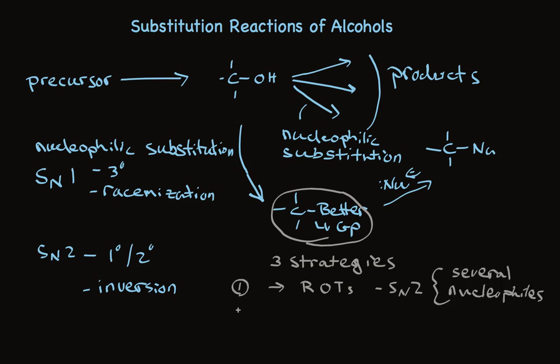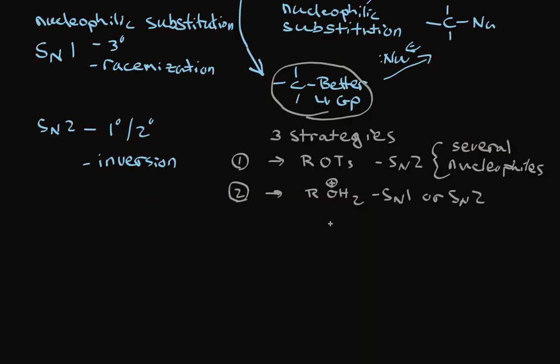A second strategy is to protonate that alcohol, and make this a very good leaving group. Actually, this will lead to SN1 or SN2 chemistry. And the specific reagents are HCl and zinc chloride, to make chlorides, and HBr to make bromides. And which mechanism operates depends on whether we're talking about tertiary alcohols or primary and secondary alcohols.